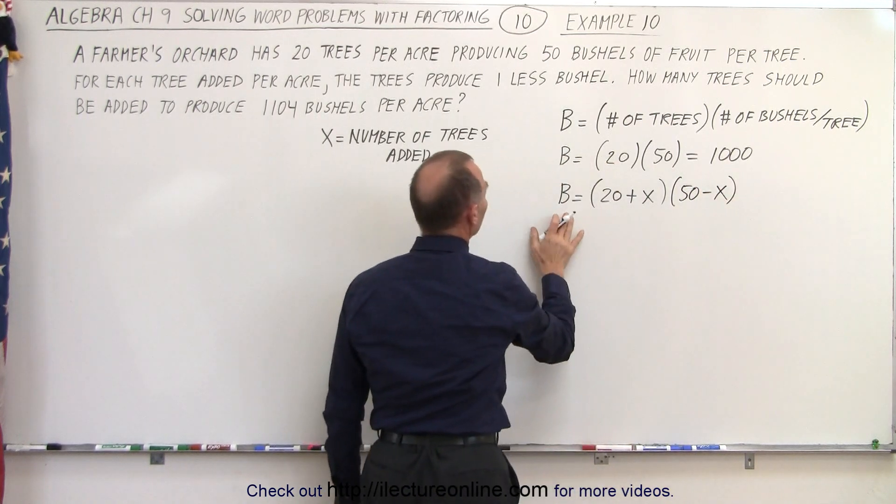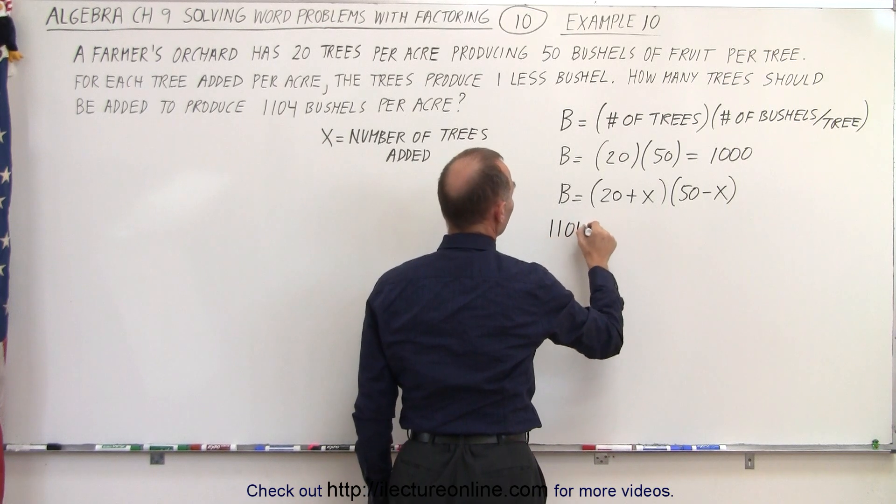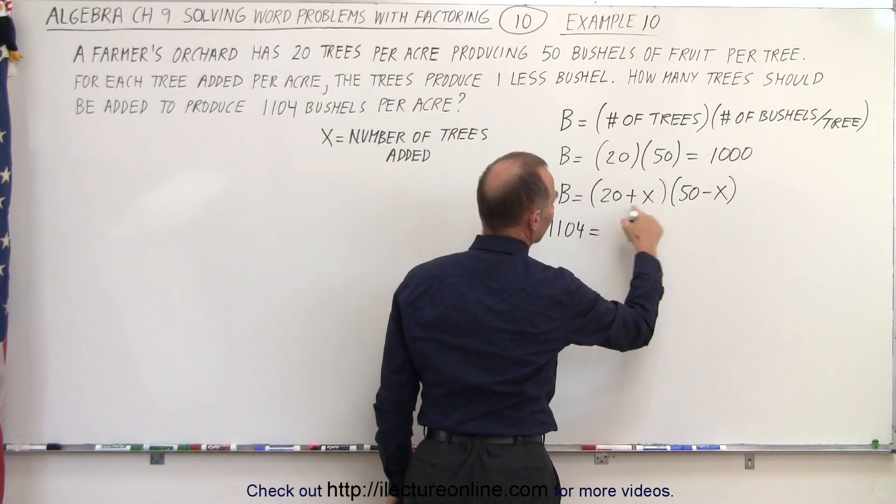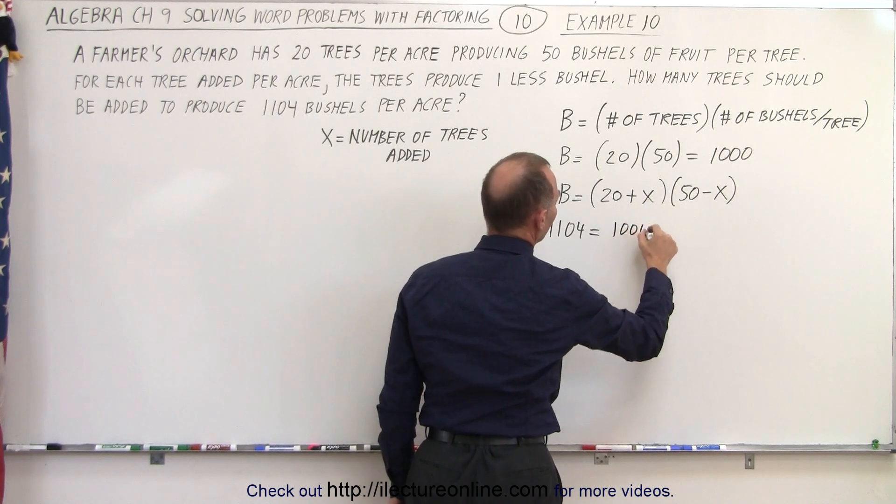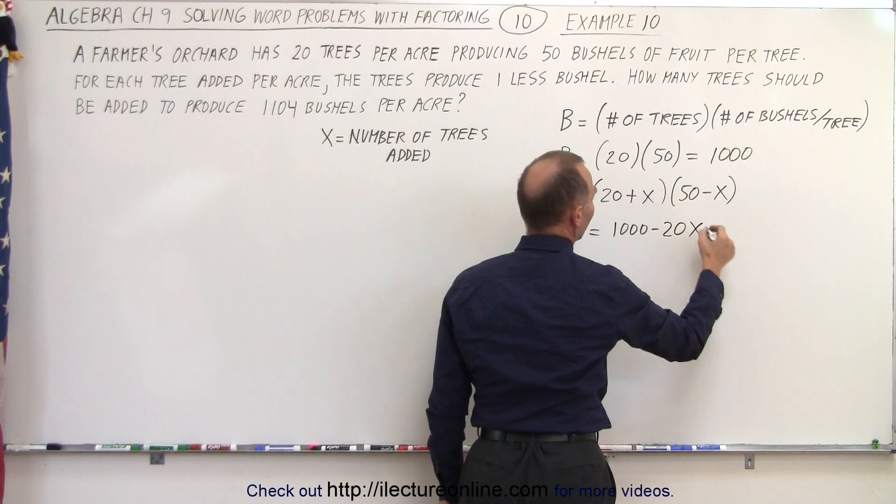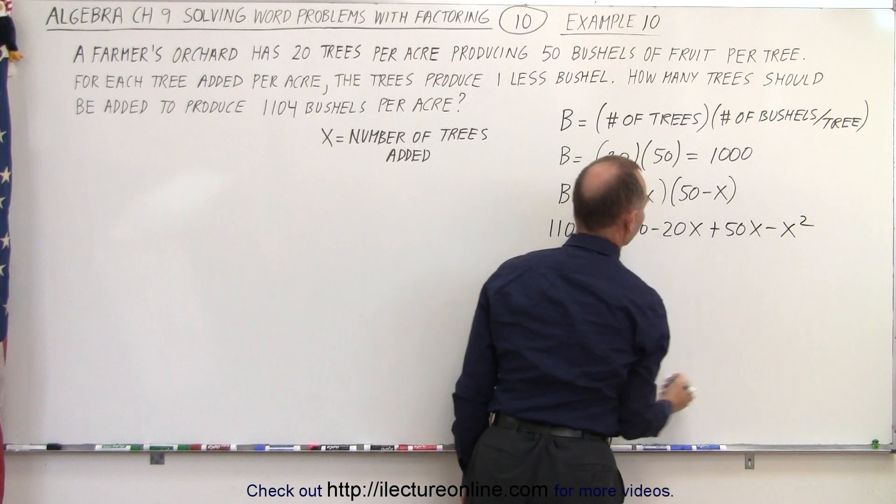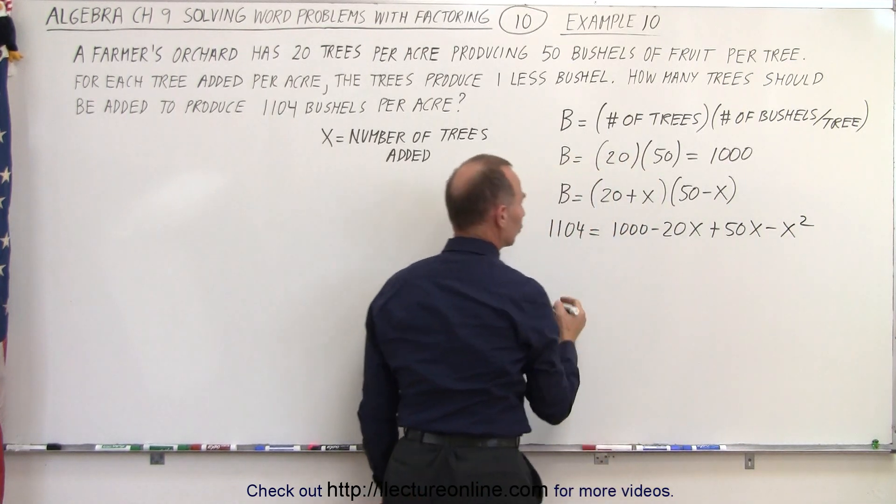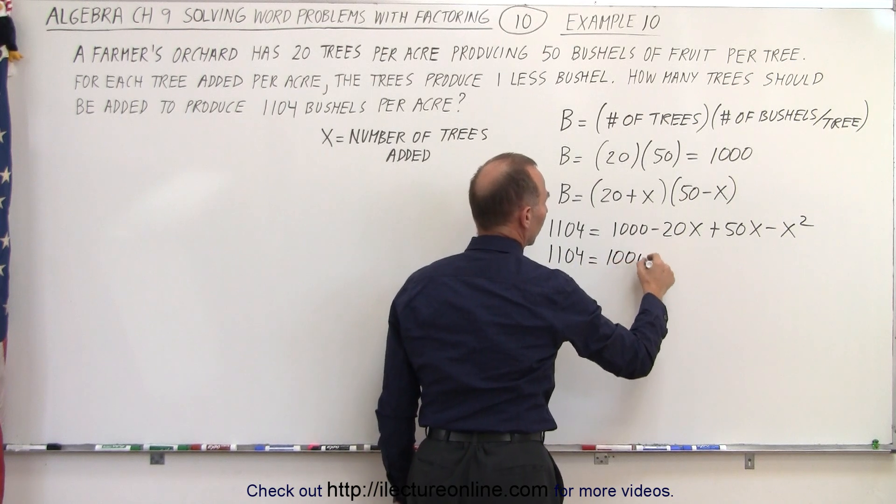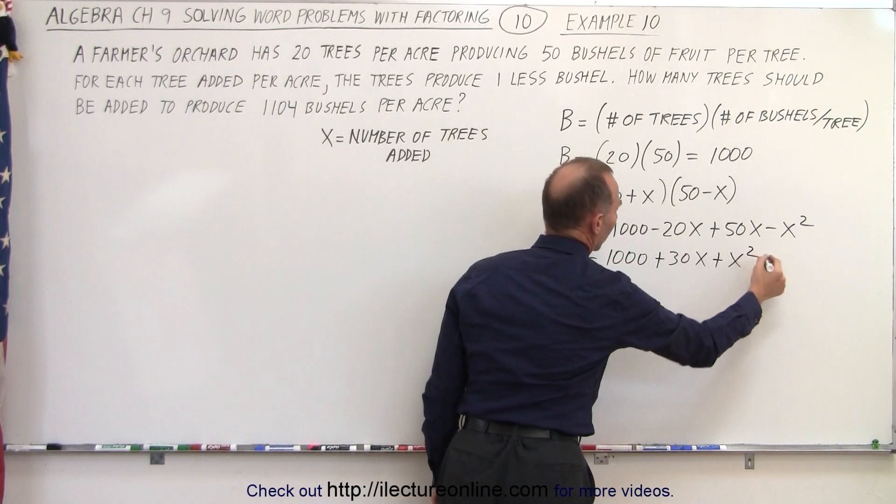Of course, the total number of bushels now will have to be 1,104. So 1,104 is equal to this product, which would be 20 times 50, which is 1,000. 20 times minus x is minus 20x. x times 50 is plus 50x. And x times the minus x is minus x squared. Combining these two terms, we have 1,104 is equal to 1,000 plus 30x minus x squared.